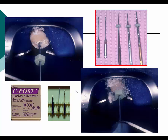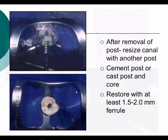After using the Gates Glidden and then nickel-titanium files, I measure the length using my radiograph to create the new post space, re-cement the post, and redo the crown preparation along with any additional treatment necessary for success. After removal of the post, I resize the canal with another post. I cement the post, or I might use a cast post and core or a metal post with a pin for anti-rotation. The key is: can I restore with at least a 1.5 to 2 millimeter ferrule?